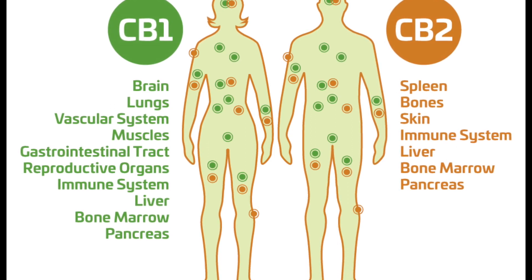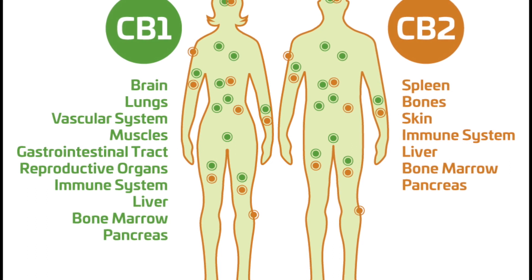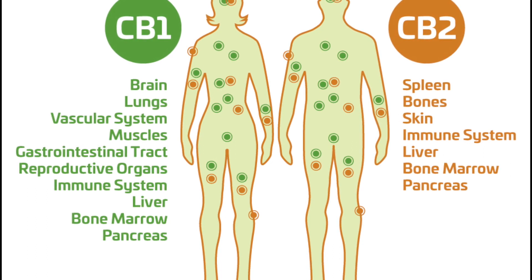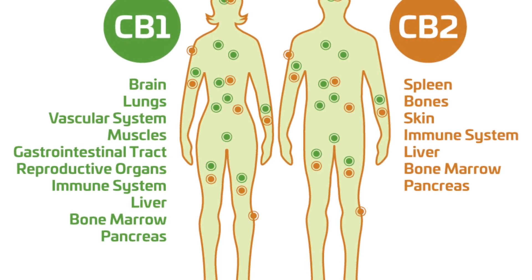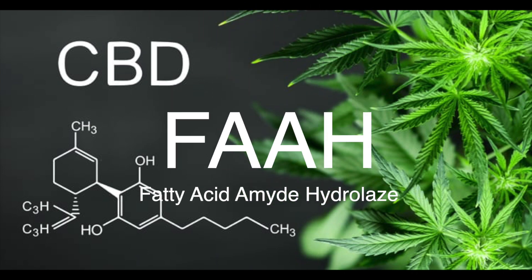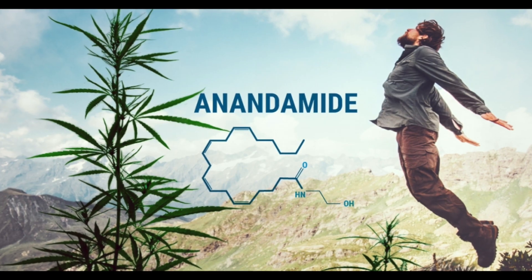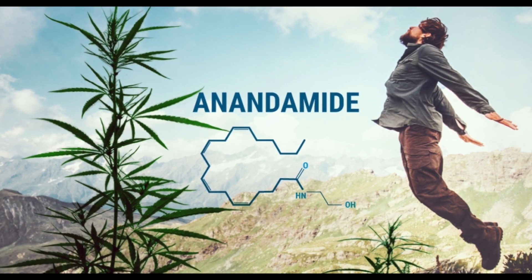With respect to the cannabinoids found in cannabis, researchers have found that THC binds to both CB1 and CB2 receptors, activating them just like an endocannabinoid. CBD doesn't bind directly to cannabinoid receptors. Instead, CBD works by inhibiting an enzyme called FAAH, which is responsible for the breakdown of anandamide, the most important endocannabinoid in the body.